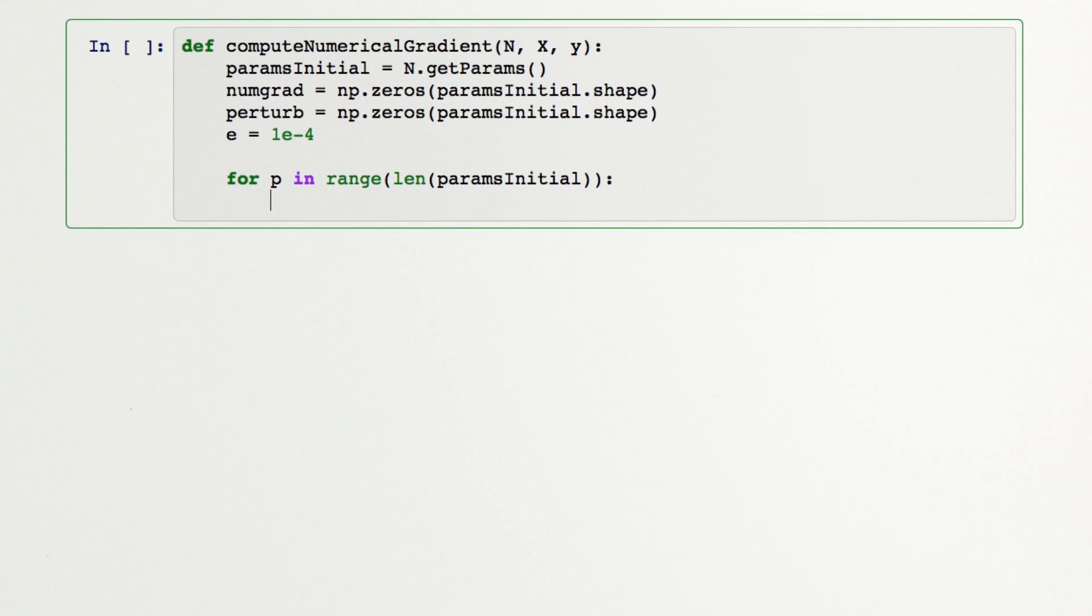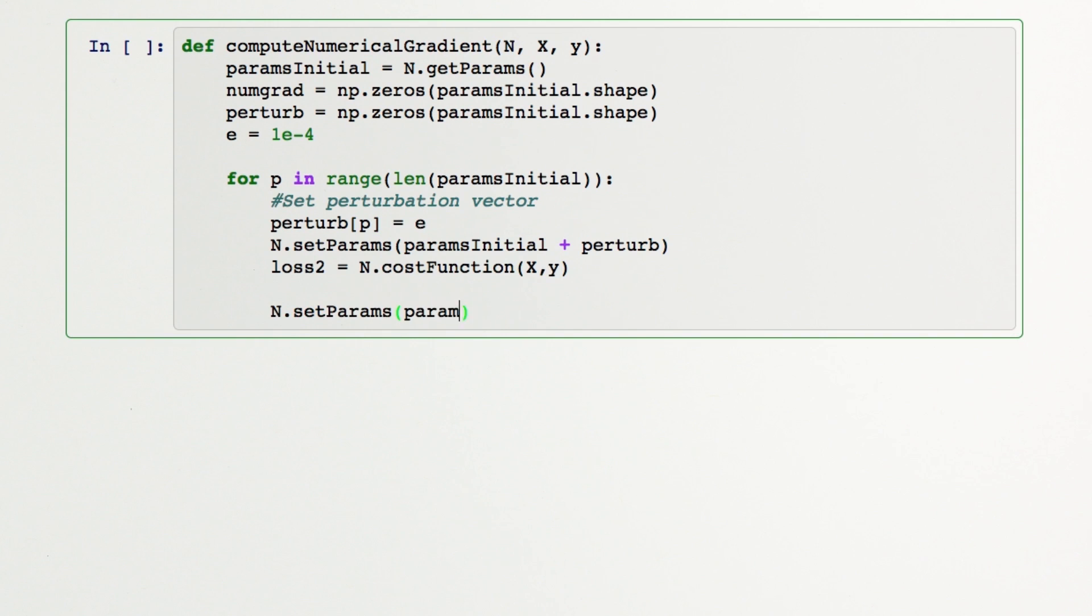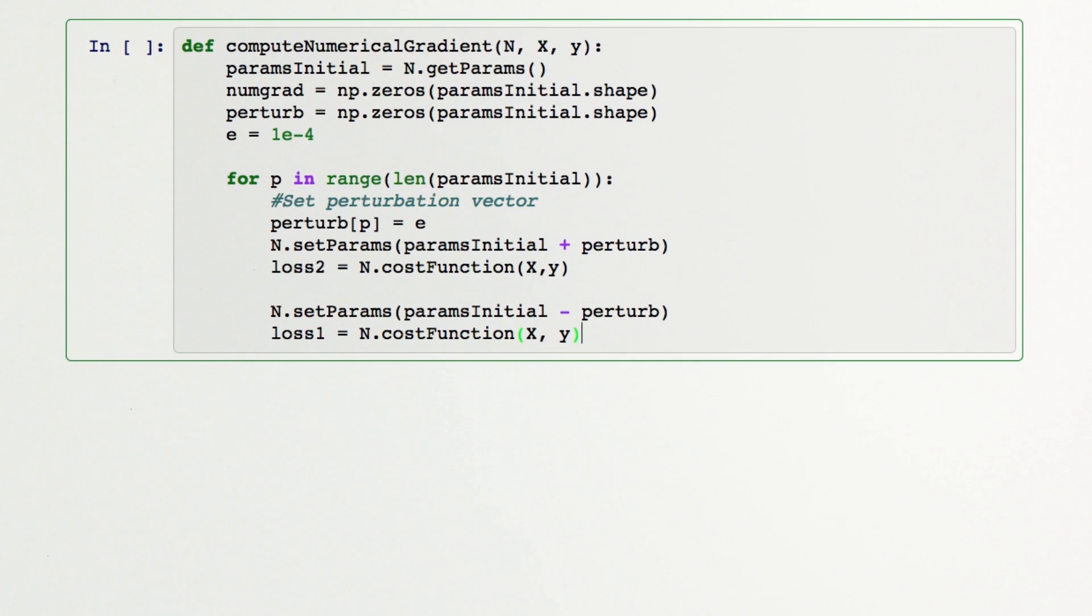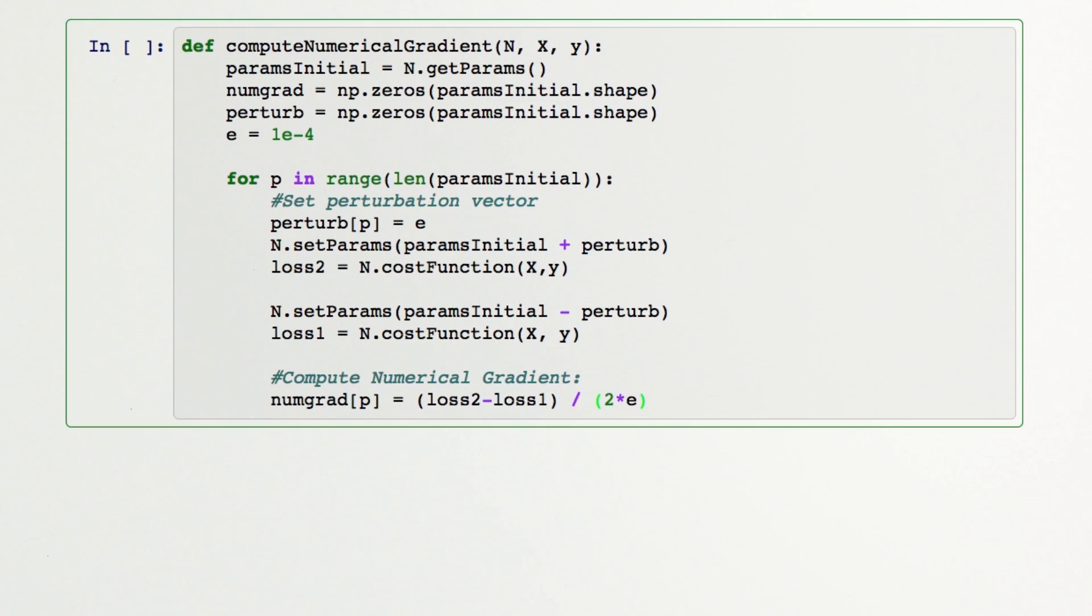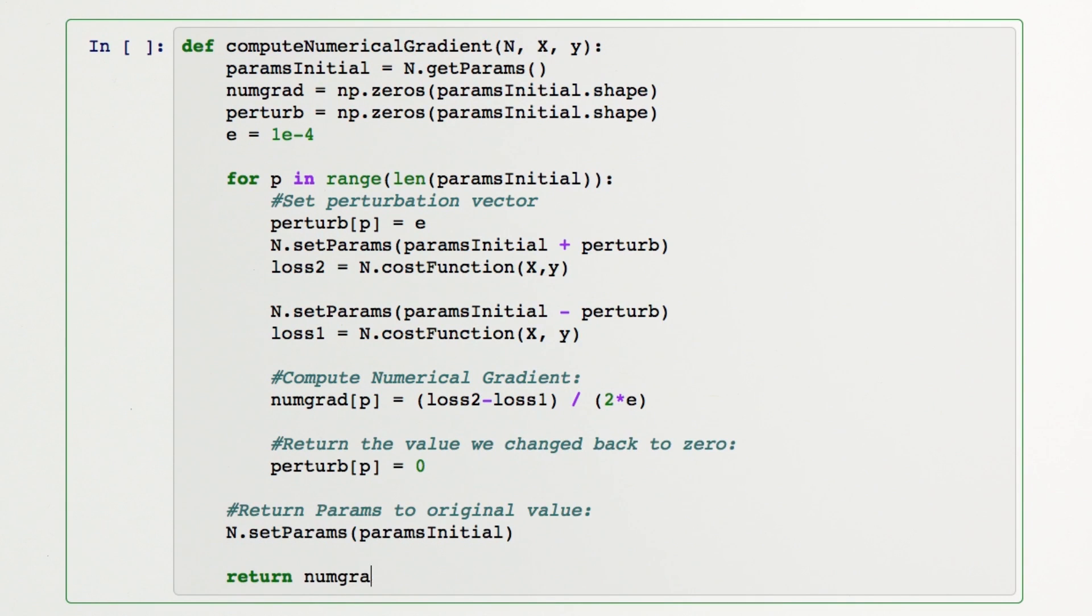We'll perturb each weight, adding epsilon to the current value and computing the cost function, subtracting epsilon from the current value and computing the cost function, and then computing the slope between those two values. We'll repeat this process across all of our weights, and when we're done we'll have a numerical gradient vector with the same number of values as we have weights.